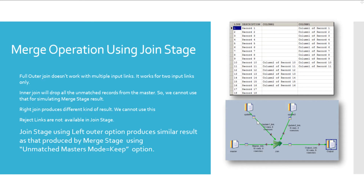Here I tried to produce the merge stage result using a join stage. I have used the same master input file and two update files. Join stage does not support reject links, hence we do not have reject links here. In join we do not have the terminologies master and update input links. Instead we have left link, right link, and intermediate links. There can be only one left link, one right link, and any number of intermediate links in a join stage with the options left join, right join, and inner join. For full outer join, only two input links are allowed — left link and right link. Intermediate links are not allowed in full outer join operation.